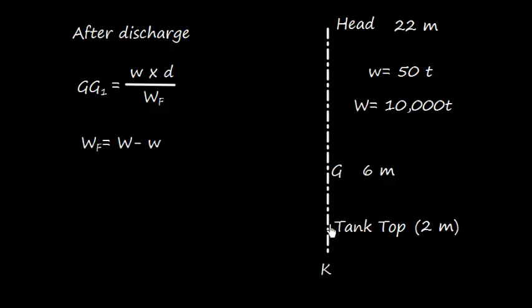Since we have discharged this weight from tank top, that is from this level, we need to have the final displacement, which is W minus w. So the final weight is 9,950 tons. Now let us work out what is the distance D. Actually we discharge from this level, and the KG of the ship is 2 meters.